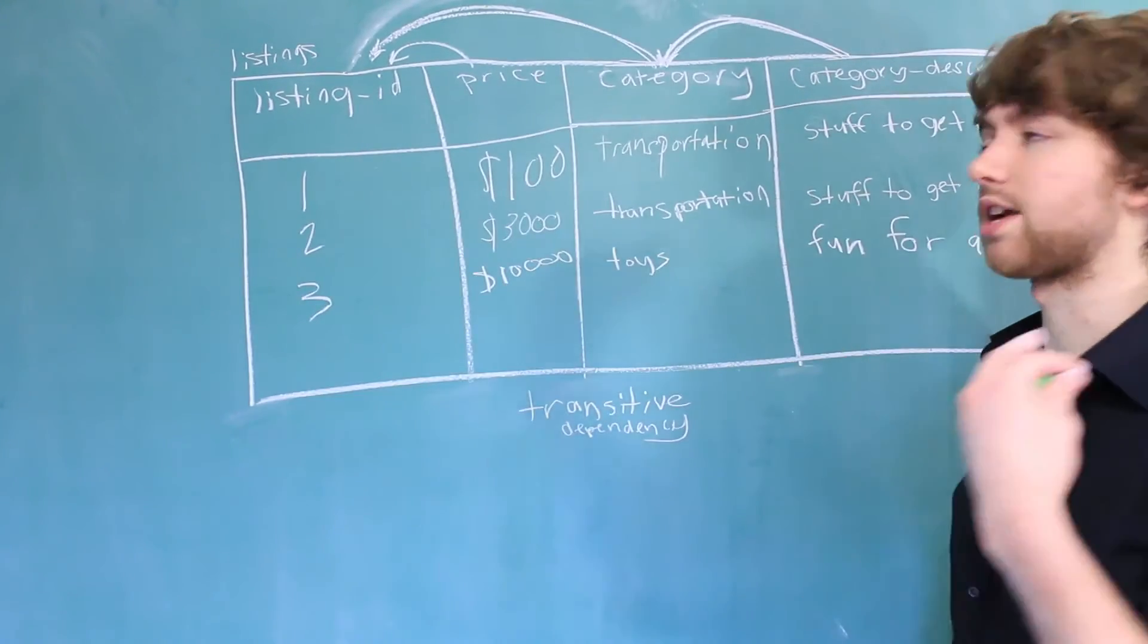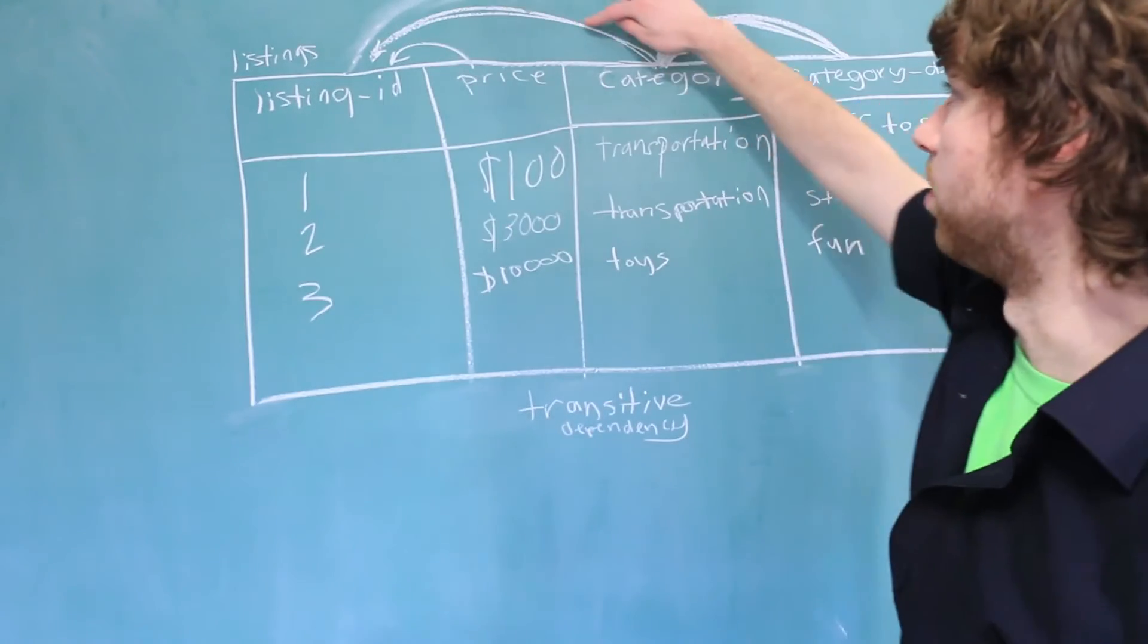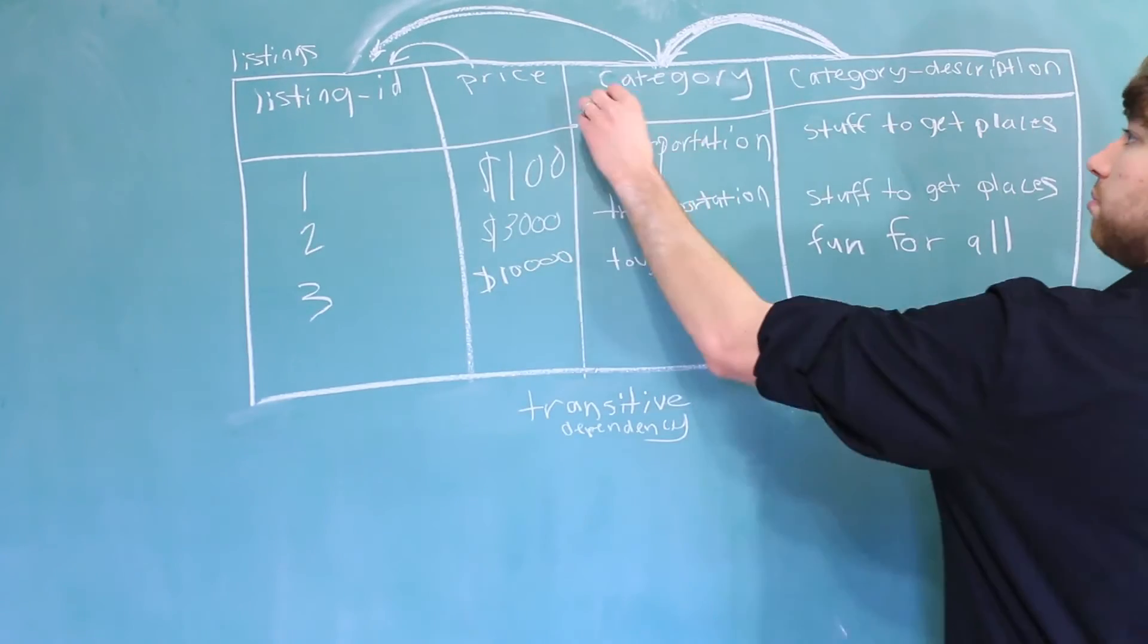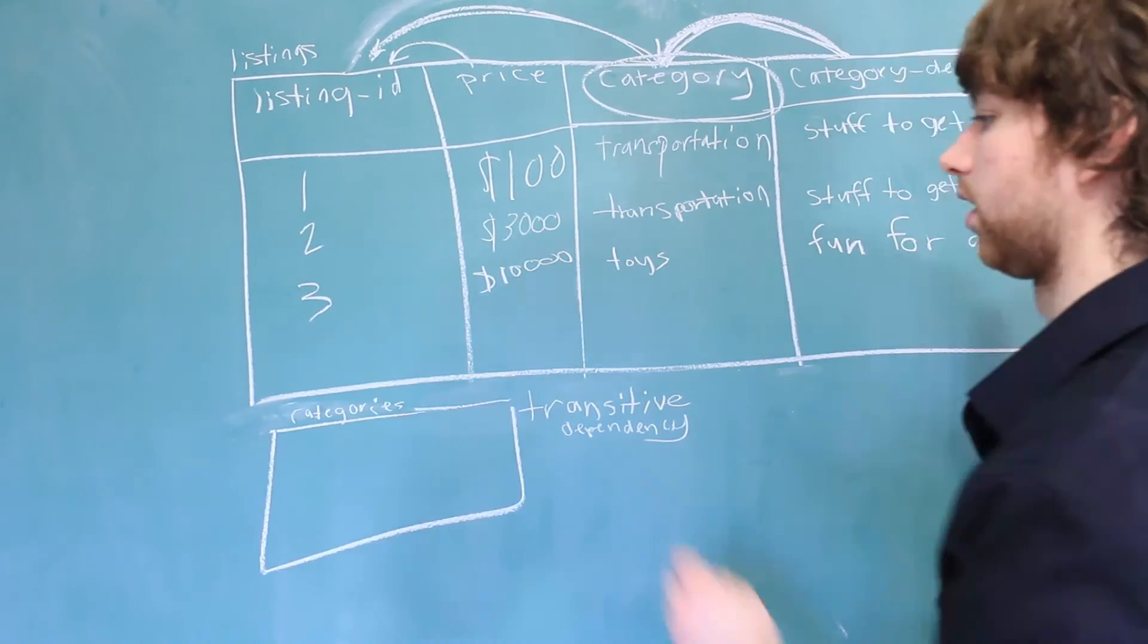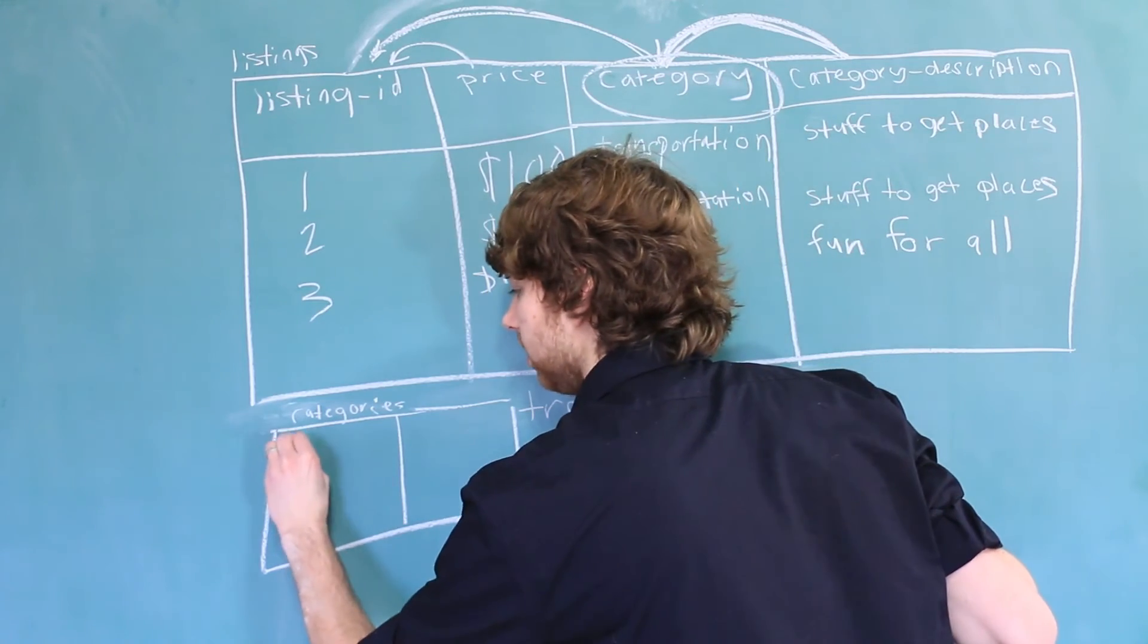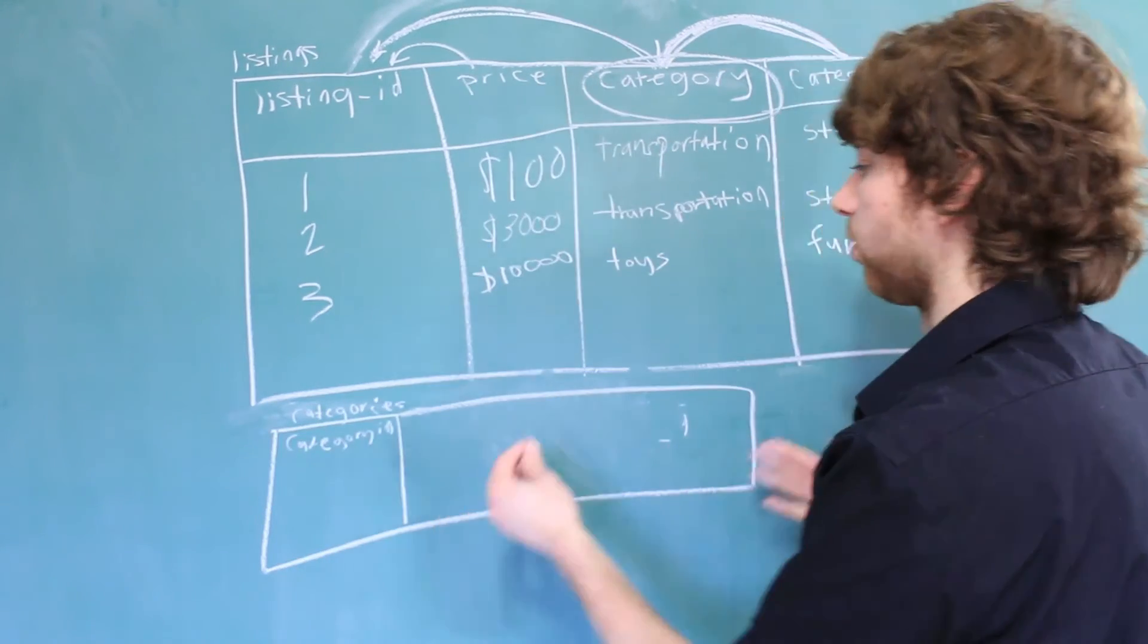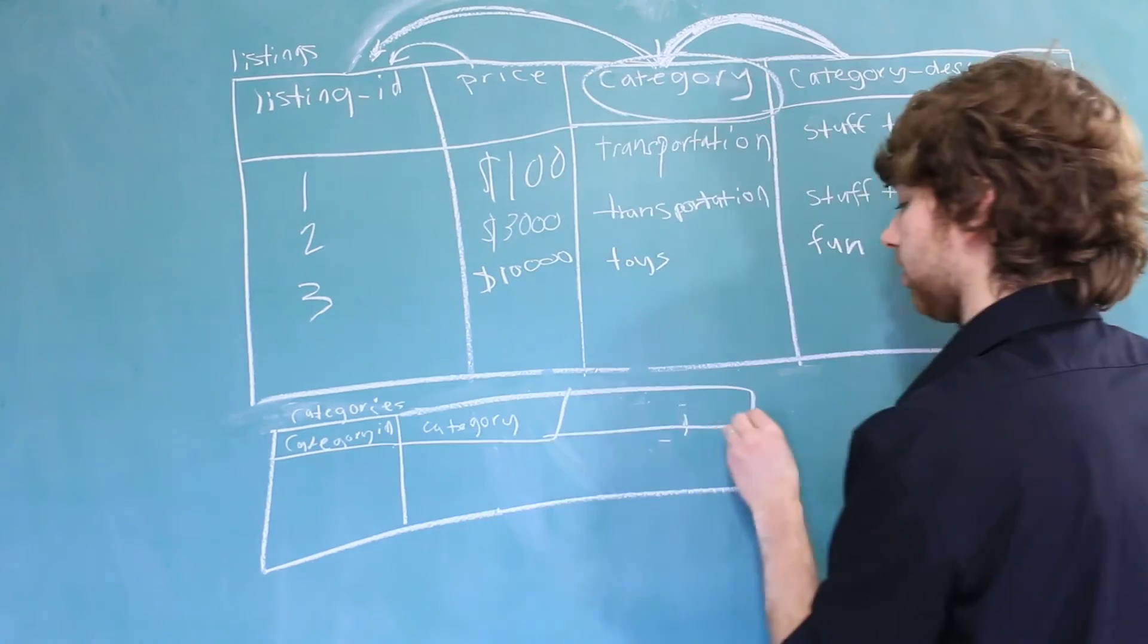The solution to fix this is actually very easy. So you start at the primary key and follow the arrow back one time. And you grab this column here, category, and you break that off into its own table. Categories. And now all we have to do is have a category ID. And then we can put all of our categories in this table. So the category ID, category, category description.